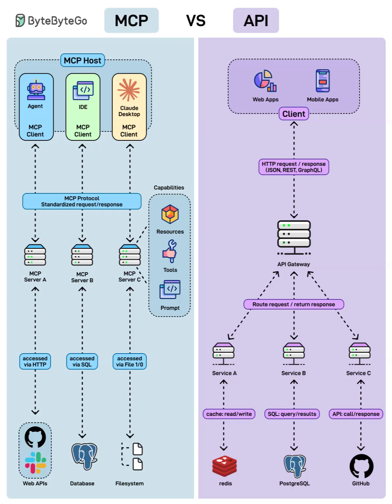Now, here comes MCP — the Model Context Protocol. It's designed specifically for an AI-native world where communication isn't just between web services, but between models, agents, IDEs, and AI-powered tools. Instead of rigid documentation, MCP is self-describing, meaning tools can dynamically tell an AI what capabilities or resources they have. This allows large language models or agent systems to discover what's available simply by asking, without human setup.